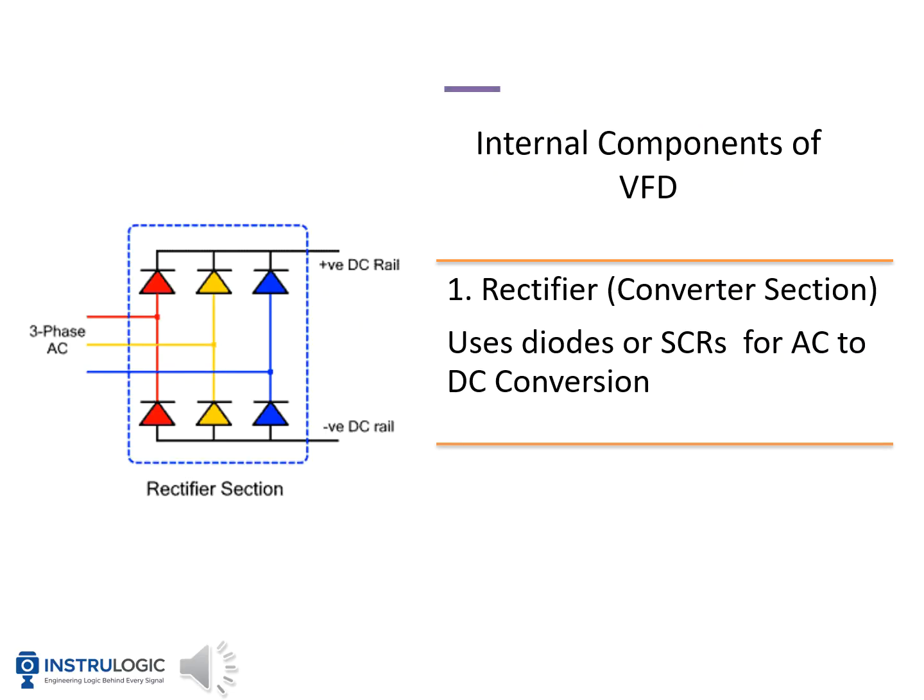Let's look at the first internal component of a VFD, which is the rectifier section, also called the converter section. The rectifier converts AC power into DC power — this is the first step in the VFD process. It uses diodes, or sometimes SCRs (silicon-controlled rectifiers), to achieve this conversion. Diodes allow current to flow in one direction, converting alternating current into direct current. SCRs are used for controlled rectification in more advanced applications. The three-phase AC input enters the rectifier, and the output is a DC voltage across the positive and negative DC rails, which then moves to the DC link or filter.